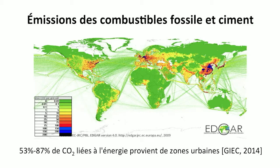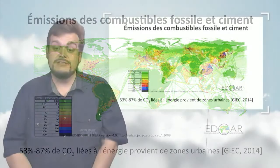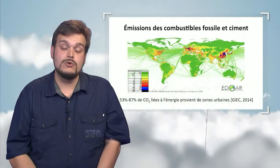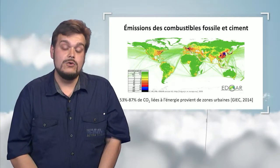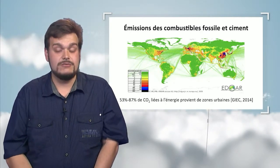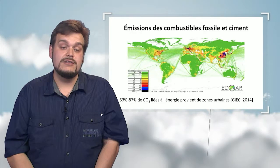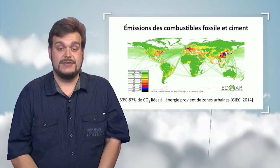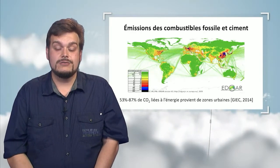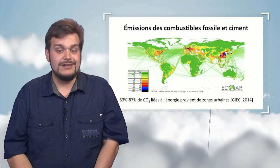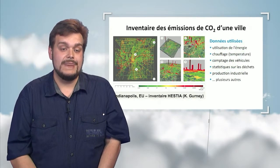If we make a quantity assessment, we'll find that urban areas account for 53% to 87% of CO2 emissions due to energy. This is a substantial part of the emissions. If one should try to understand the human share of greenhouse effect gas emissions, it's essential to understand the functioning of urban areas.